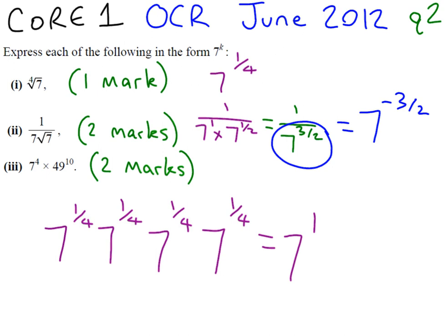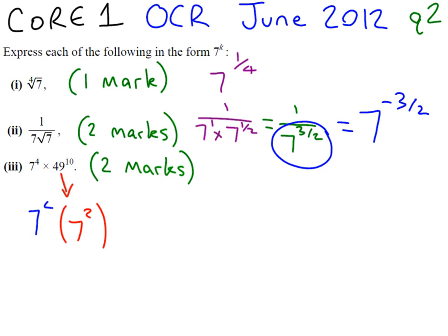The third part of this question is 7 to the power of 4 times 49 to the power of 10. We cannot combine powers unless our base number is the same. So we need to make this 49, 7. 49 can be written as 7 squared. So we're going to change that. So we've got 7 to the power of 4 times 7 squared to the power of 10. Now when we do to a power to another power, the indice law says you have to times the powers. So that's 7 to the power of 20. Now we're timesing, so we add the powers, 7 to the power of 24.